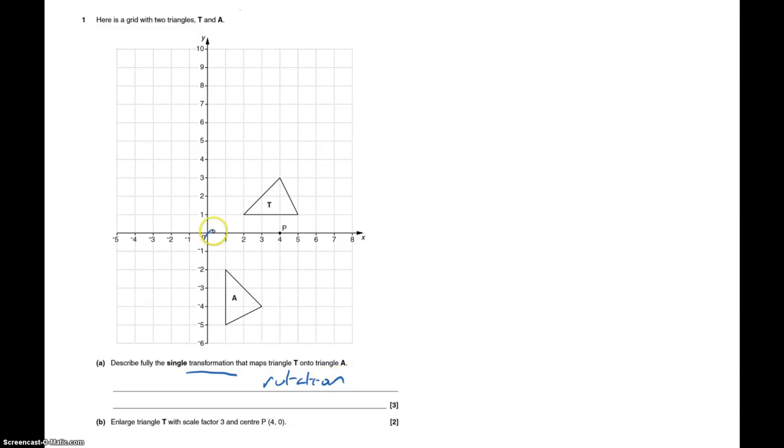A centre, and the best way of using some tracing paper, the centre will be 0, 0, the origin, centre 0, 0, and the angle is 90 degrees clockwise.